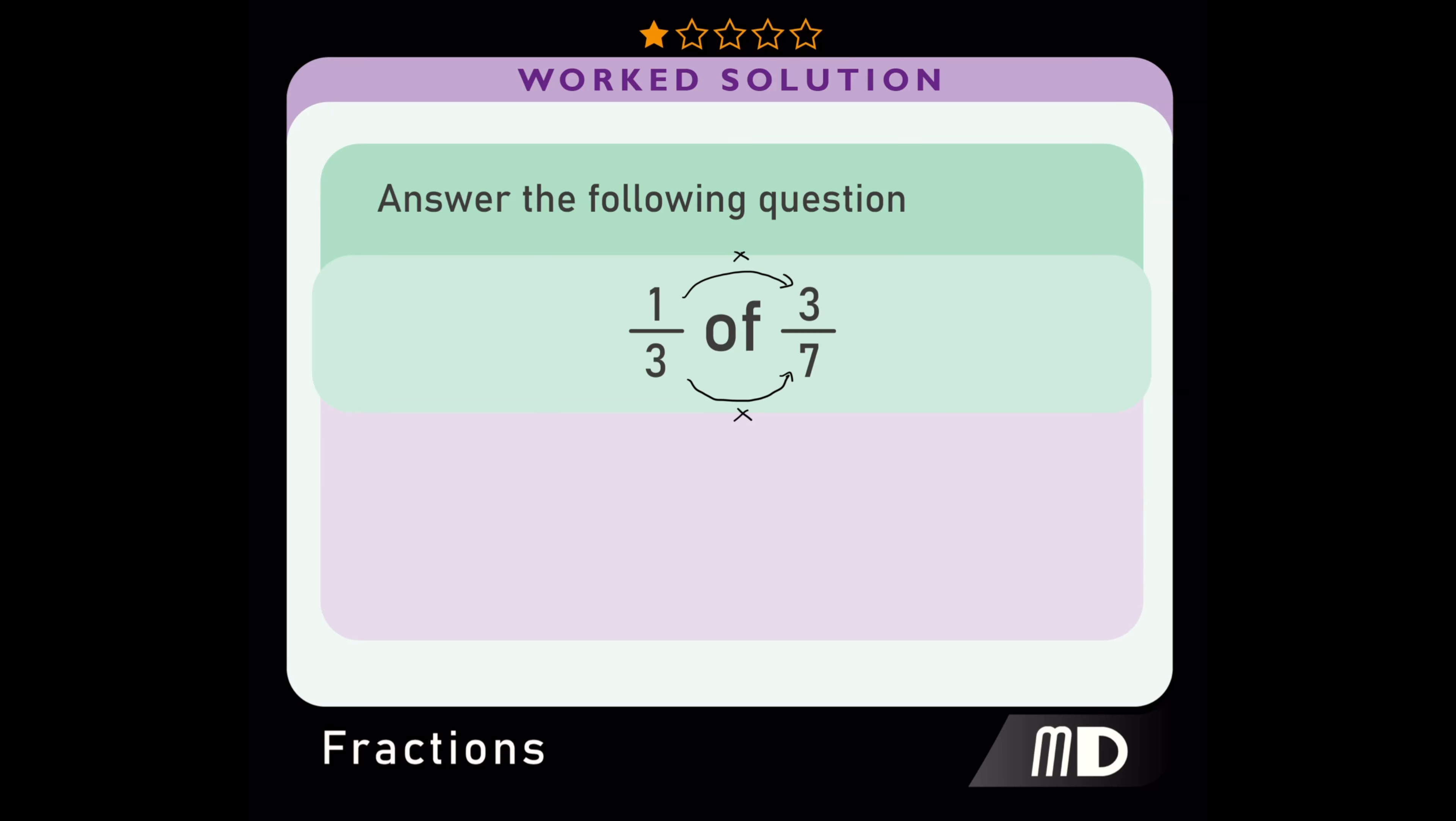The numerators of our fractions are one and three. One multiplied by three is three. So the numerator of our answer is three.